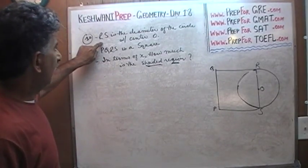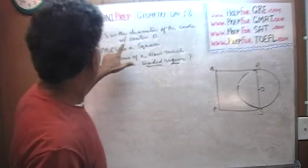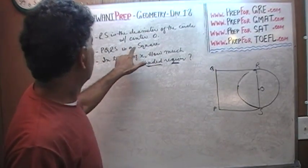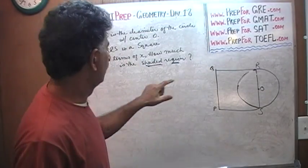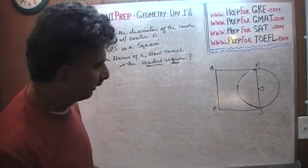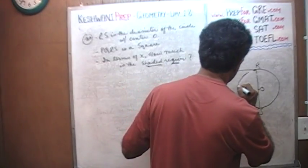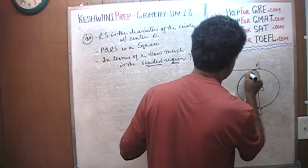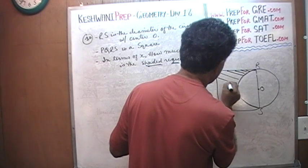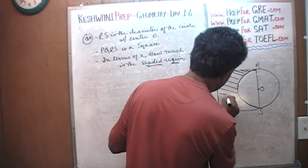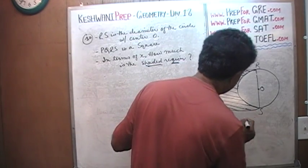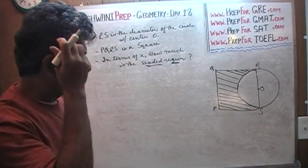So one more time: RS is the diameter of the circle with center O right there. PQRS is the square. The question simply is, in terms of X, how much is the shaded region? And the shaded region they are asking for is this right here — there we go, this is the shaded region.